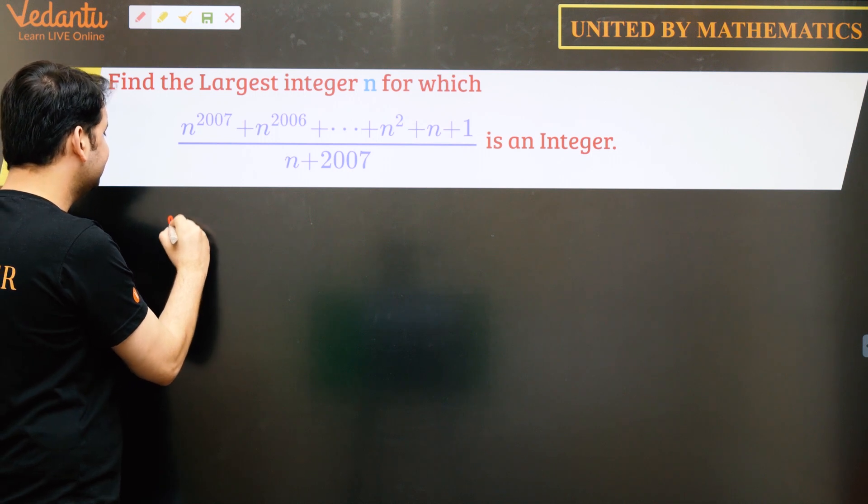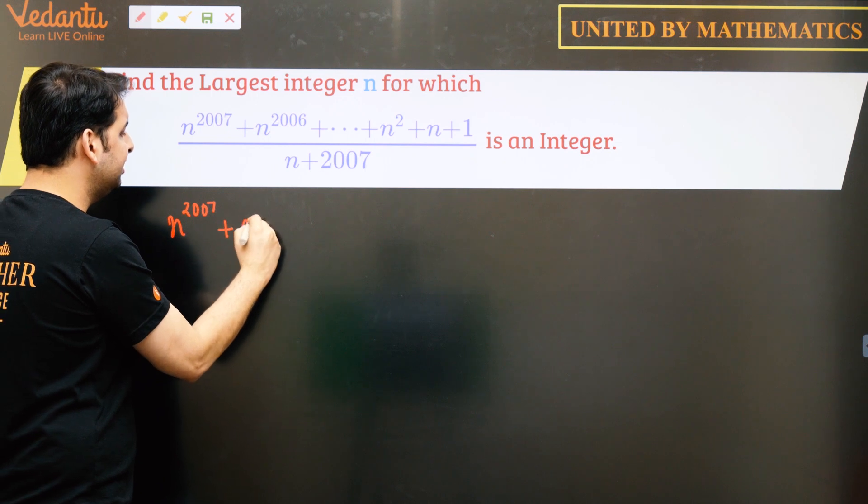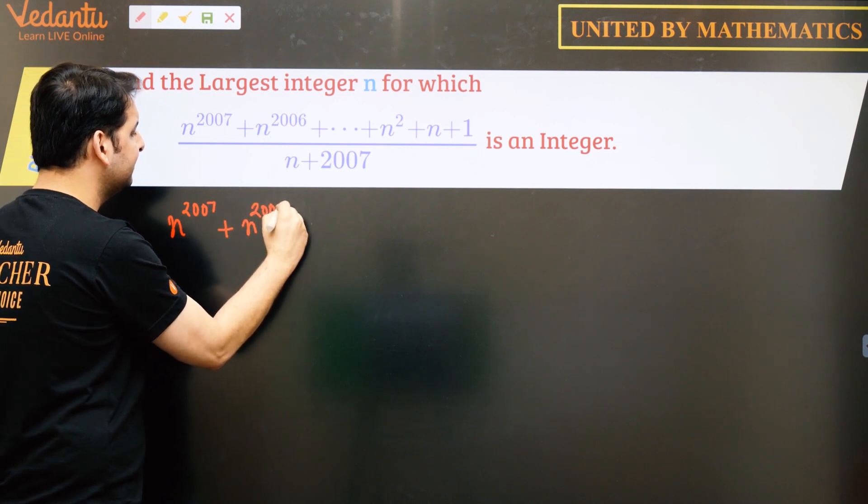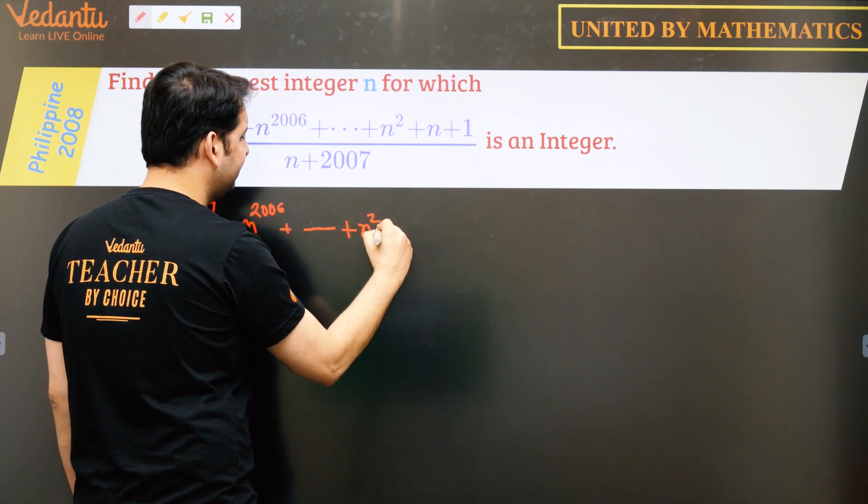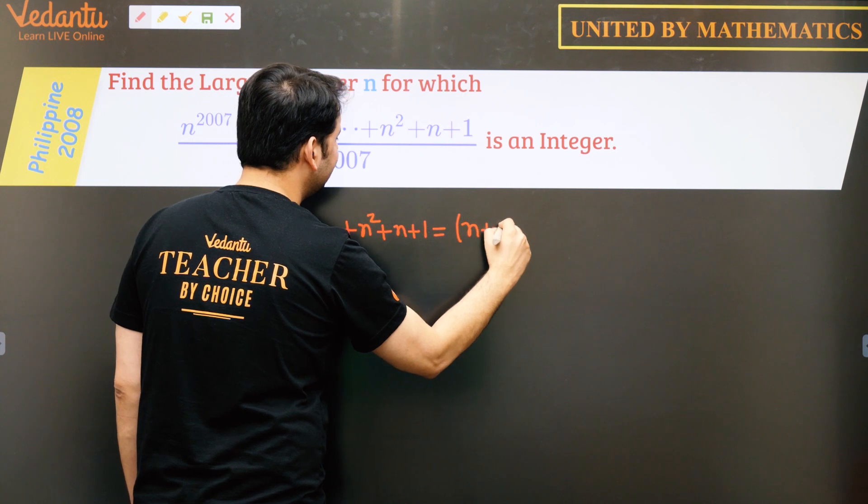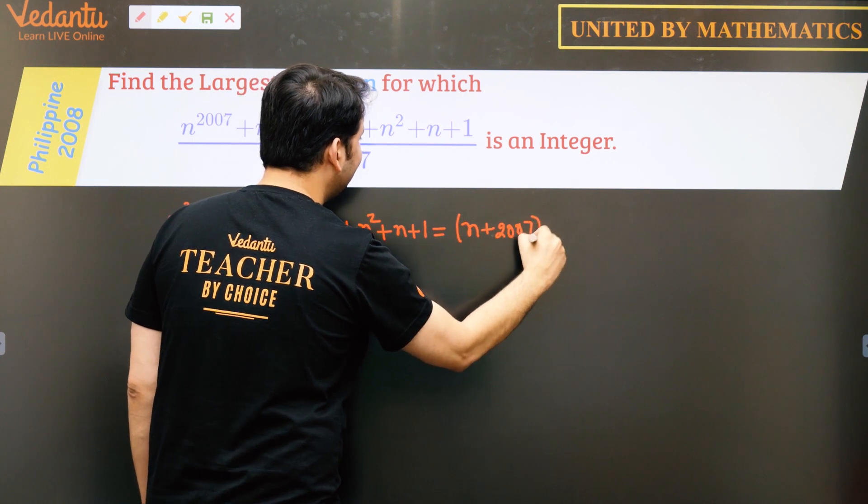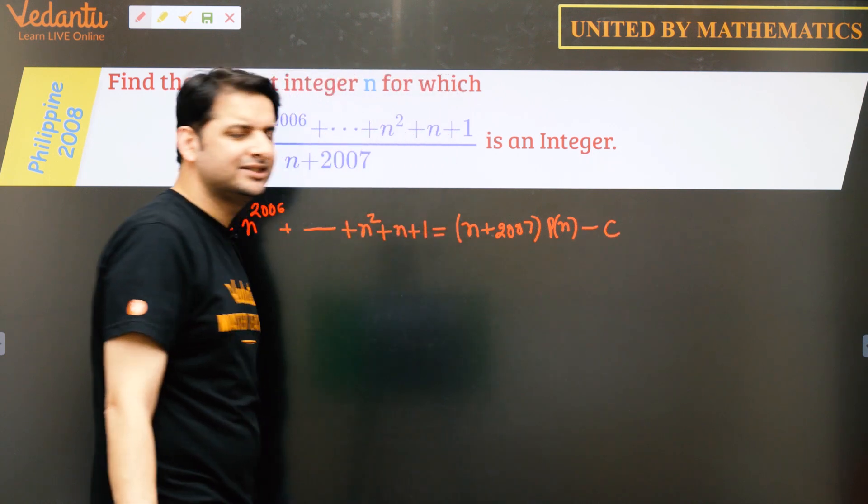So if we write it, can I say n to the power 2007 plus n to the power 2006 and it goes till n square plus 1. So if I try to divide this by n plus 2007, there will be some quotient in the form of a polynomial and let's say the remainder is minus c.